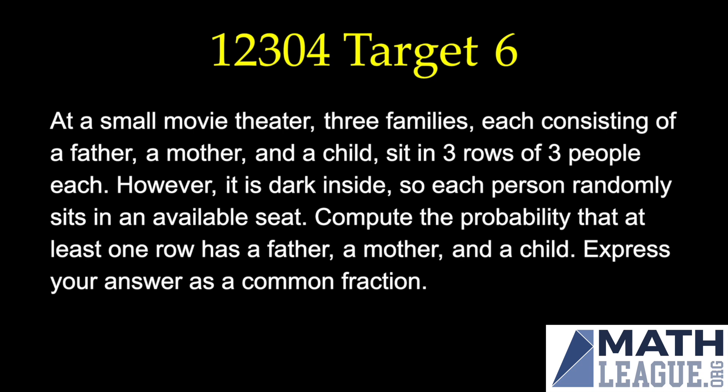However, it is dark inside so each person randomly picks an available seat. Compute the probability that at least one row has a father, a mother, and a child. Express your answer as a common fraction.